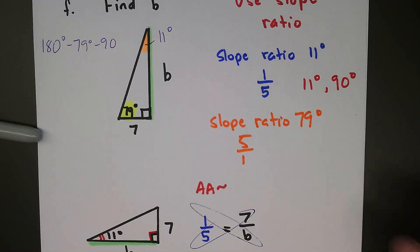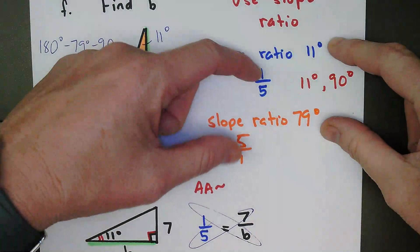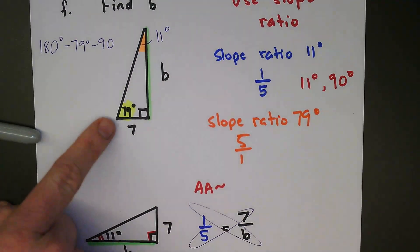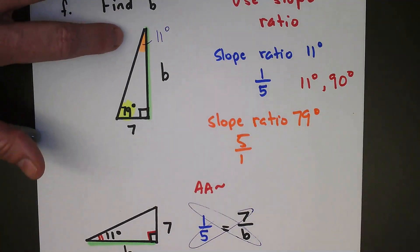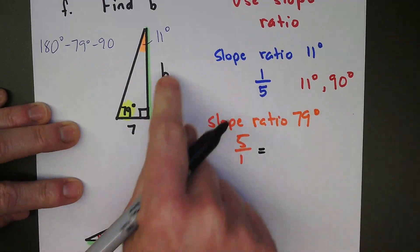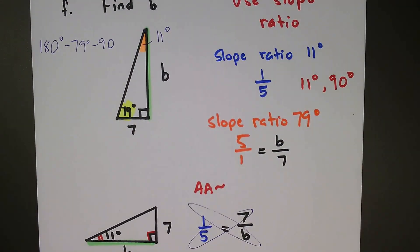We spent a lot of time actually talking about the fact that complementary angles, which is what these are, they add up to 90, are going to have reciprocal slope ratios. So if we know the slope ratio for 79 degrees, we don't even really have to do any reorienting. We don't even have to find that 11 degree angle, because that's the rise-over-the-run for 79 degrees, and we can set that equal here to B over 7, the rise-over-the-run in this particular triangle.